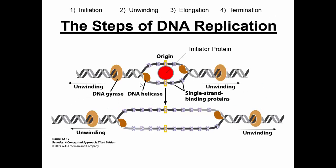There are four main steps to DNA replication: initiation, unwinding of the double helix, elongation, and termination. The origin of DNA replication is the sequence of DNA that signals where to start replicating. The first thing that happens is an initiator protein latches onto the DNA, opens the replication bubble, and identifies the origin of replication.